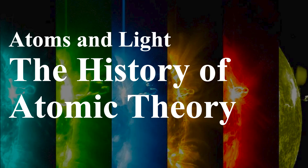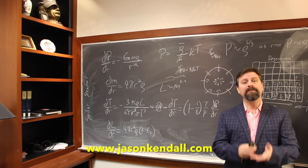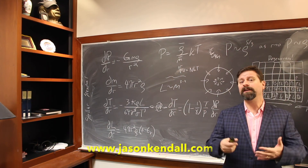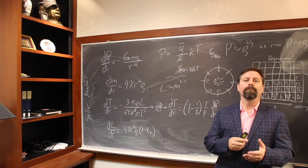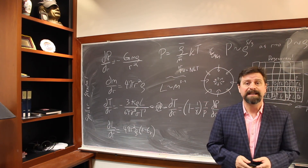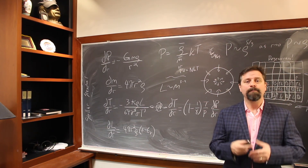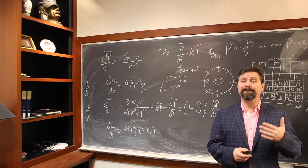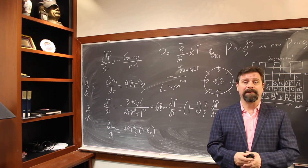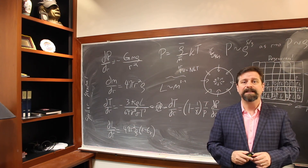Hello, this is Jason Kendall, and welcome to the next of my introductory astronomy lectures. Today we're continuing on the history of the atom. We talked last time about what an atom is, what elements are, how they have protons and electrons and neutrons, and how they're arranged in orbits around them, and isotopes. But where did this concept of the atom really come from? That's what we're going to talk about right now.